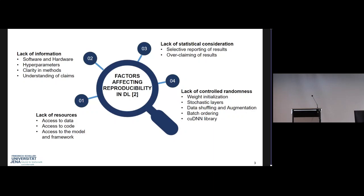What are the factors we are actually looking for in reproducibility in deep learning? These can be categorized into four categories. The first is lack of resources — if you don't have access to the dataset or source code, it is really hard to reproduce results. Even if resources are available, there is the second factor: lack of information, where we need required information to complete our experiments. That could be related to software and hardware, hyperparameters, clarity in method, and understanding of the claim. The third factor is lack of statistical consideration — authors tend to provide only the best selective result and don't provide how many trials they went through.